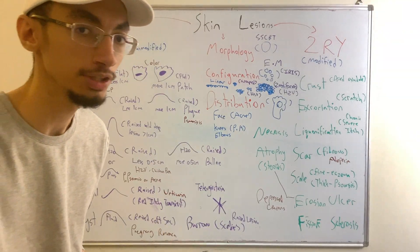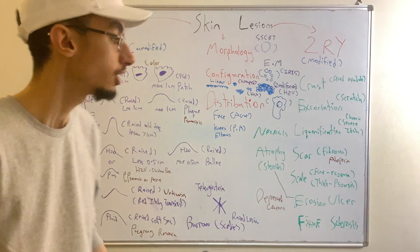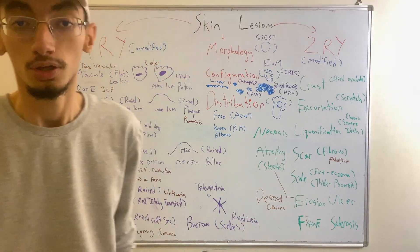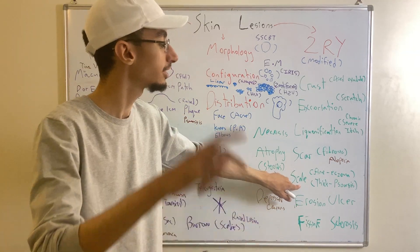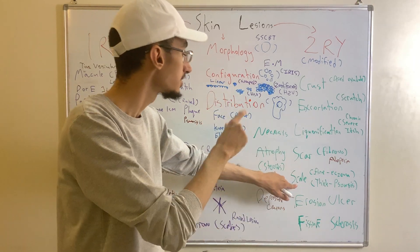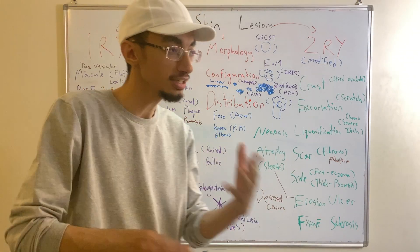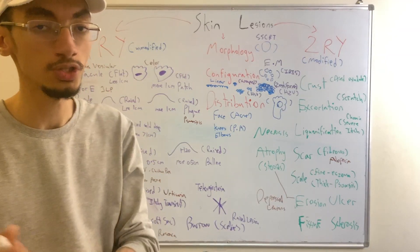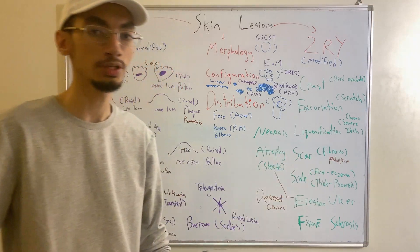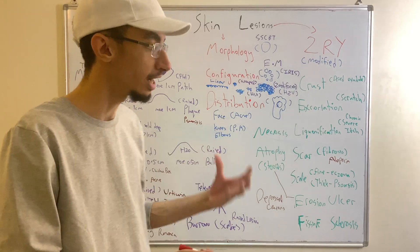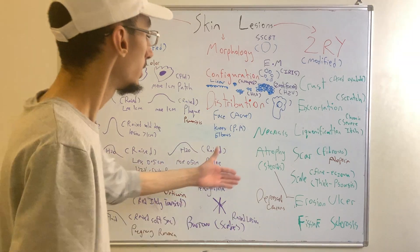Scales are another secondary lesion. In psoriasis, you see thick, silver scales on plaques — a distinctive silvery-scaly appearance. However, scales are not exclusive to psoriasis; in eczema, you can find fine, thin scales unlike the thick ones seen in psoriasis.